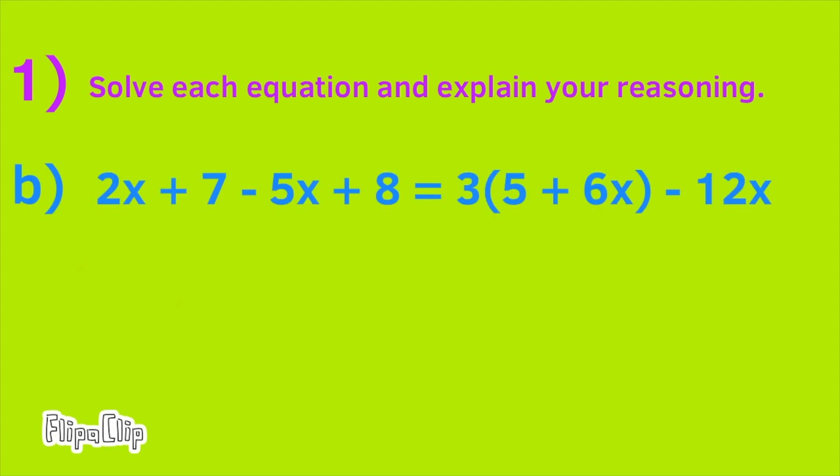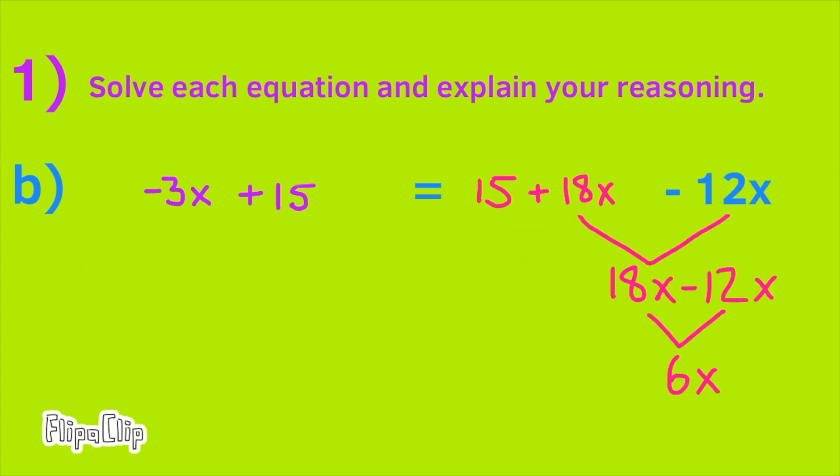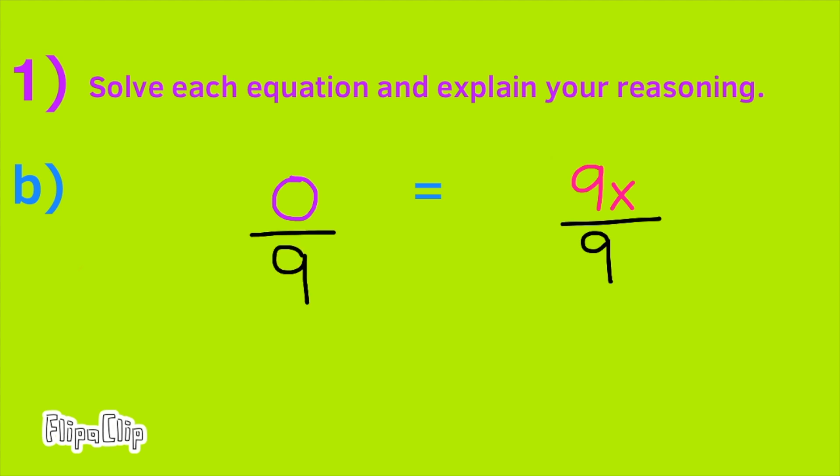B. Combine the like terms. 3 times 5 plus 3 times 6X. Minus 12X equals 6X. Add 3X to both sides. Subtract 15 from both sides. Divide both sides by 9. 0 equals 1X or 0 equals X or X equals 0.